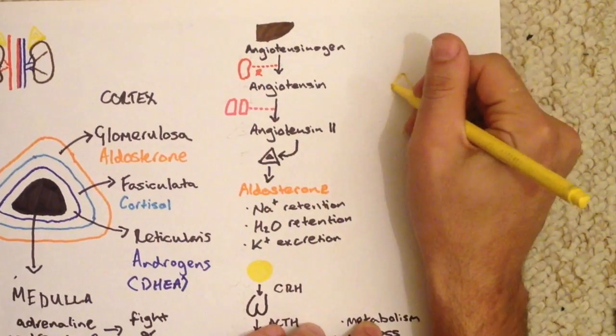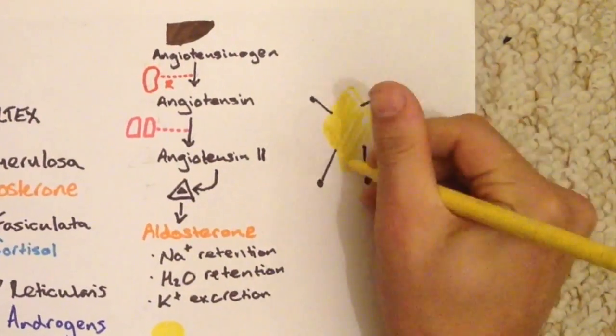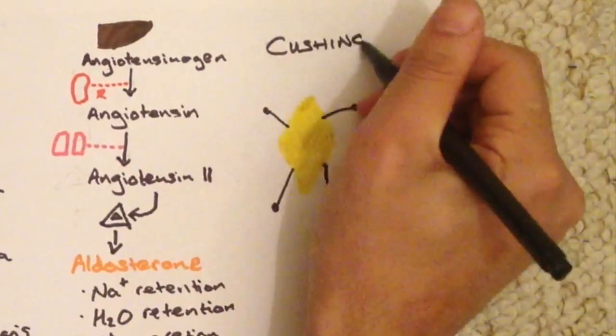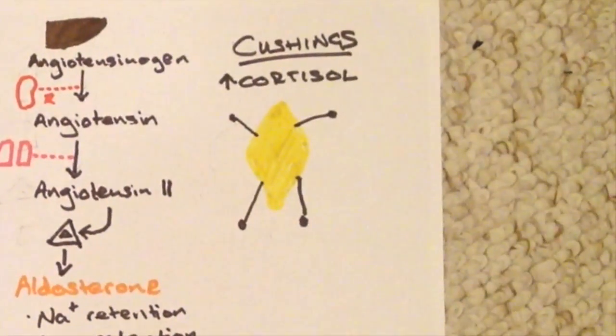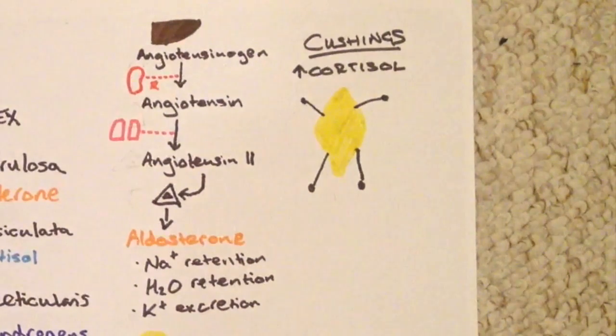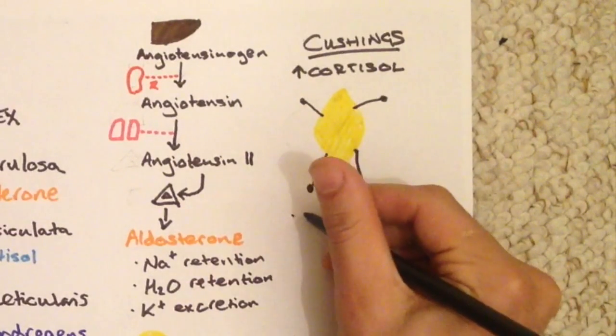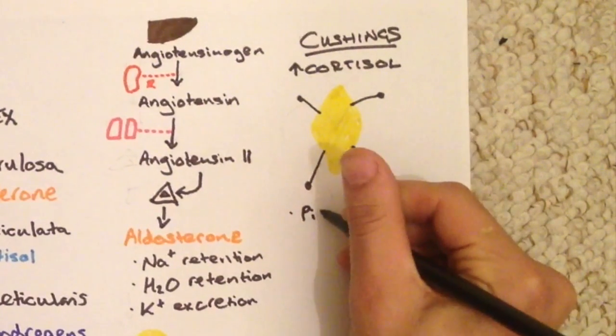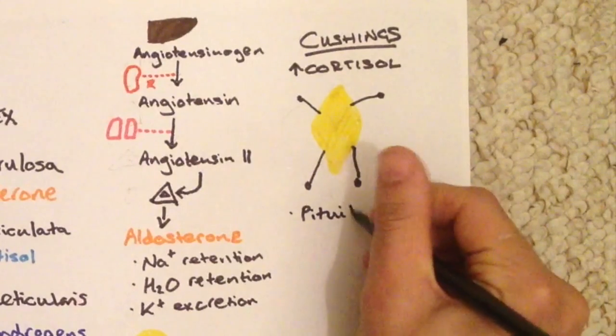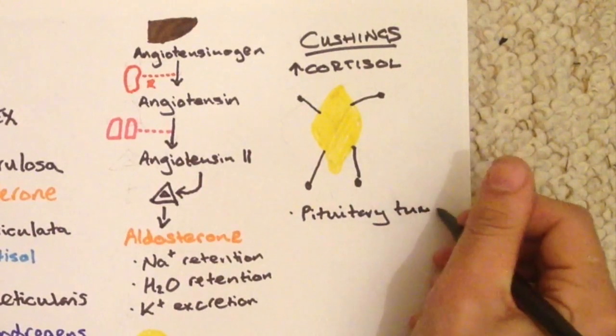So for the final topic of this video, I wanted to talk about a clinical disease known as Cushing's disease. Essentially, this is when there is excess cortisol in the blood. There can be a few causes to this. Firstly, a pituitary tumor, and this is known as Cushing's disease. This is going to cause an increase in the production of ACTH, and therefore the increase in cortisol in the blood.